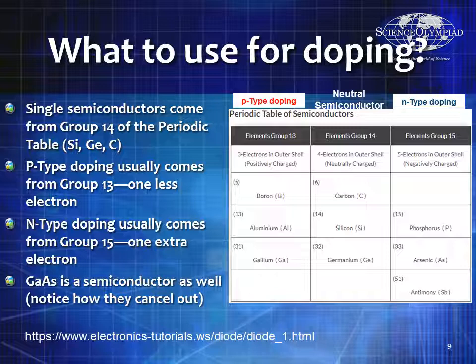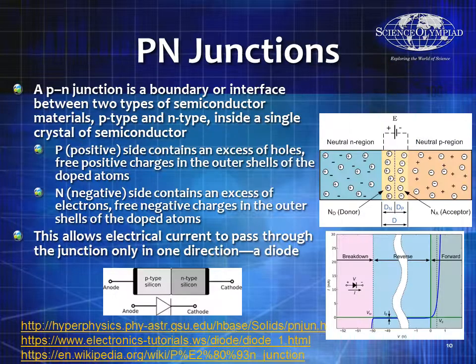Gallium arsenide acts like it's in Group 14. That's why gallium arsenide has a lot of really cool capabilities — faster switching, less power consumption, etc. It is much more difficult and expensive to deal with, and it also has some issues with environmental impacts due to the arsenic. So when we put these N-type and P-type materials together...